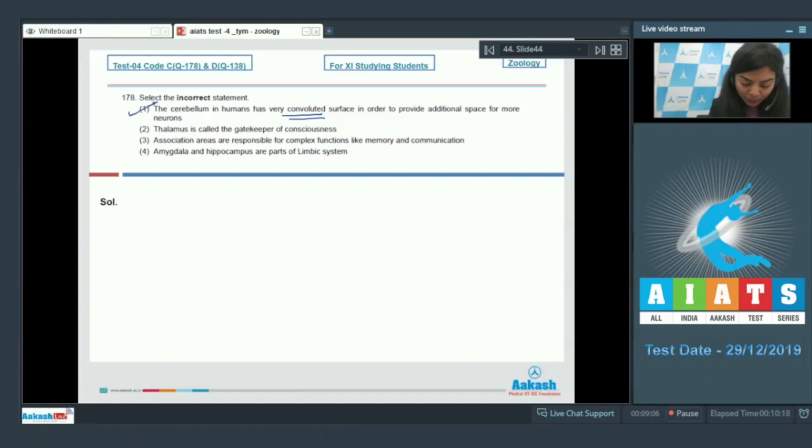The gatekeeper of our consciousness is Reticular Activating System, which is also known as the RAS system. So this is incorrect. RAS is the gatekeeper.